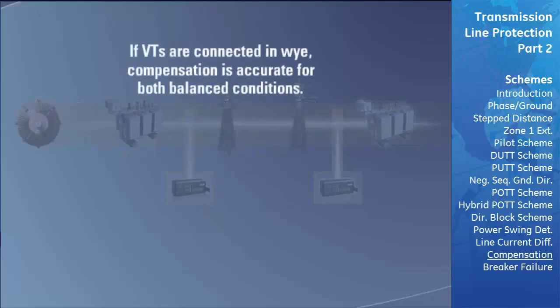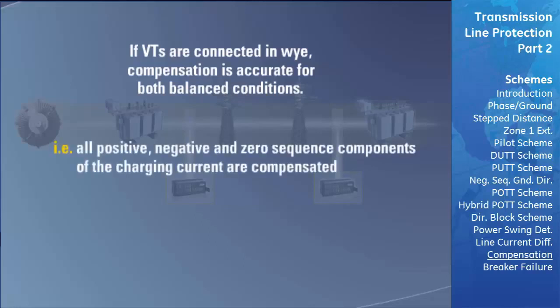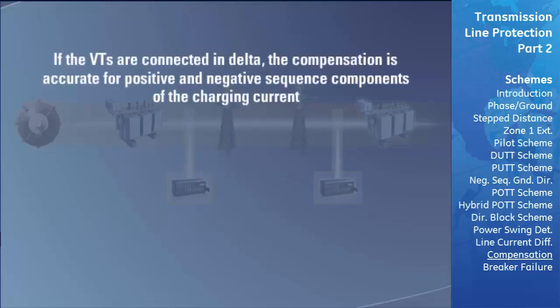If the VTs are connected in Y, the compensation is accurate for balanced conditions—all positive, negative, and zero-sequence components of the charging current are compensated. If the VTs are connected in delta, the compensation is accurate for positive and negative sequence components only. Since the zero-sequence voltage is not available with delta-connected VTs, the relay cannot compensate for the zero-sequence current.